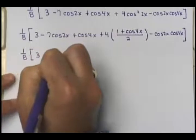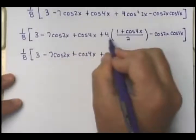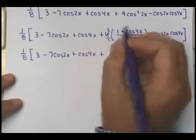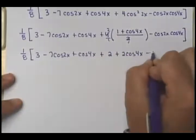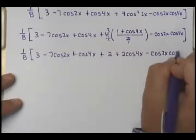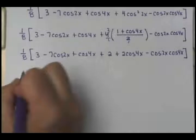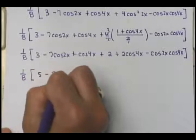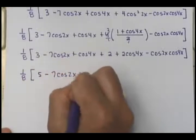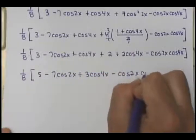So distributing, I have 3 minus 7 cosine 2x plus cosine 4x. Then 2 goes into the 4 two times, distributing the 2 gives 2 plus 2 cosine 4x minus cosine 2x cosine 4x. Combining like terms, that's 5 minus 7 cosine 2x plus 3 cosine 4x minus cosine 2x cosine 4x, all times 1 eighth.